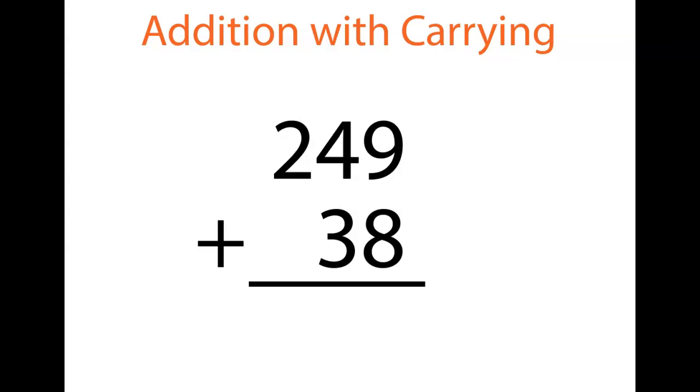All right, next level we're going to do three digits plus two digits. It's going to get more exciting, but the core principles are still the same. Starting with our nice, lovely, beautiful columns. The ones digits on top of the ones digits, the tens digits on top of the tens digits. You'll notice as this gets more complicated, it's really important to make sure the columns are straight.